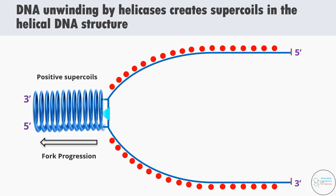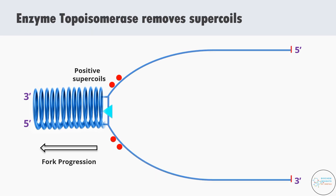Now if these supercoils are not removed, they can create excessive torsional strain that makes it difficult for the replication machinery to continue unwinding the DNA. This can cause the replication process to stop or may lead to incomplete replication. So in order to solve the problem of positive supercoils, there is a group of special enzymes called topoisomerases for removing supercoils.